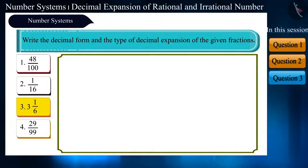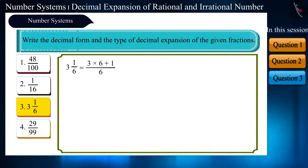The third fraction looks slightly different. It is 3, 1 by 6. 6 multiplied by 3 plus 1 is equal to 19 by 6.